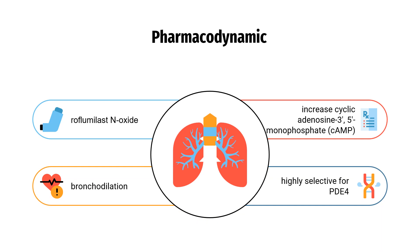Pharmacodynamics: Roflomilast and its active metabolite, Roflomilast N-oxide, increase cyclic adenosine 3',5'-monophosphate, cAMP, in affected cells by inhibiting PDE4. They are highly selective for PDE4 and are effectively inactive against PDEs 1, 2, 3, 5, and 7.